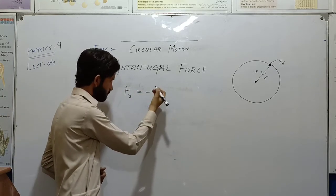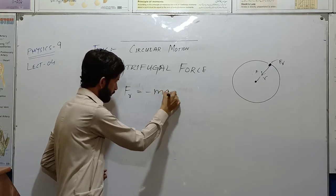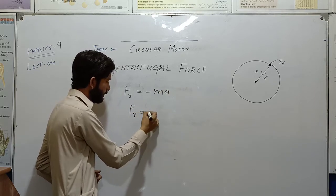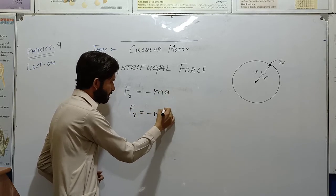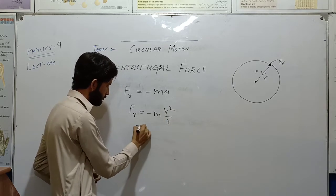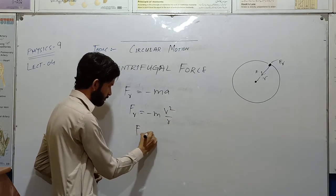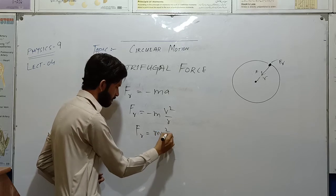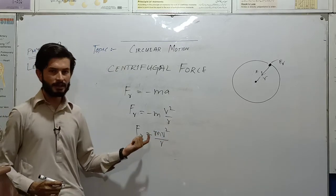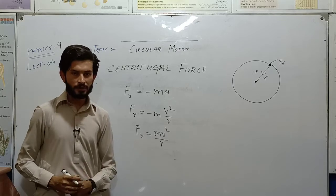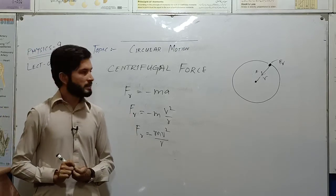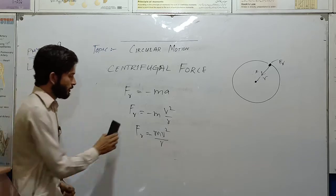Simply, centrifugal force equals mv²/r with a negative sign, because the negative sign indicates it is opposite to centripetal force — it points outward. So this is the application of Newton's third law.